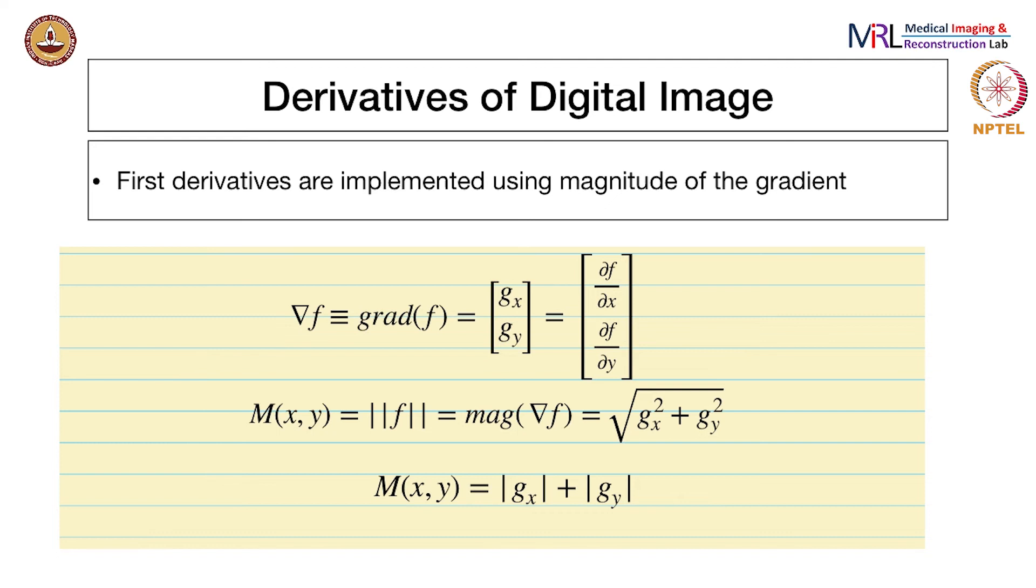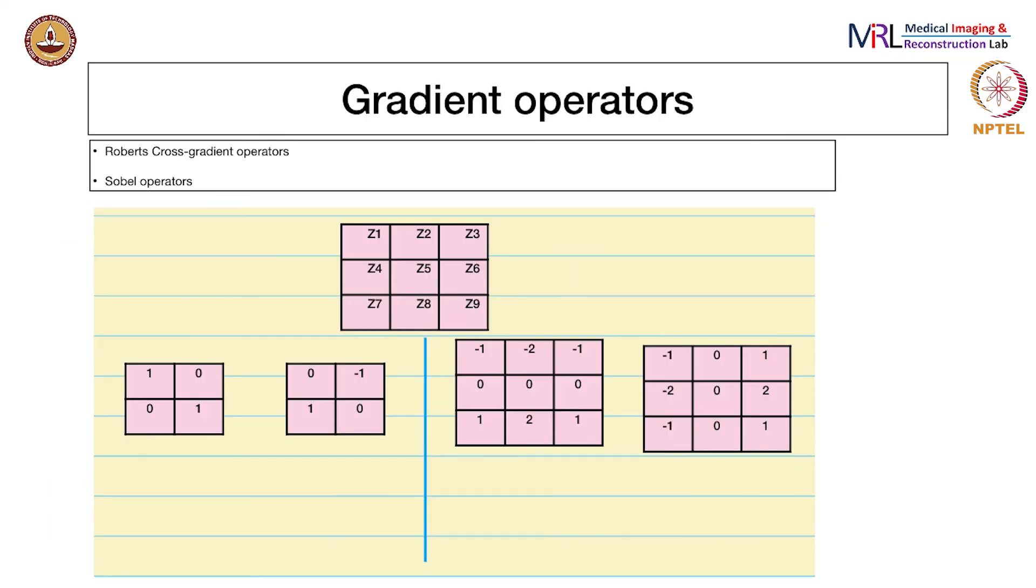Another operator typically used often is the derivative operator, the derivative of a digital image. The gradient, as it's called, is actually a vector with two dimensions for an image: GX and GY, defined as such. The magnitude of the gradient is the Euclidean metric, GX square plus GY square. You can also define the magnitude as modulus of GX plus modulus of GY. These are equivalent definitions in terms of magnitude. In the general sense, when talking about gradient of f, you calculate both these components.